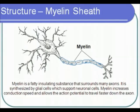Axons of neurons are often myelinated. Myelin is a fatty insulating substance that surrounds axons. It is produced by a type of glial cell called a Schwann cell. Myelin increases conduction speed and allows the neural signal to travel faster down the axon.